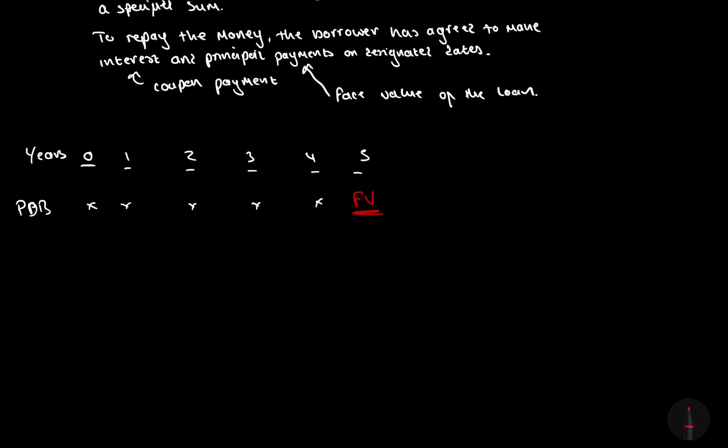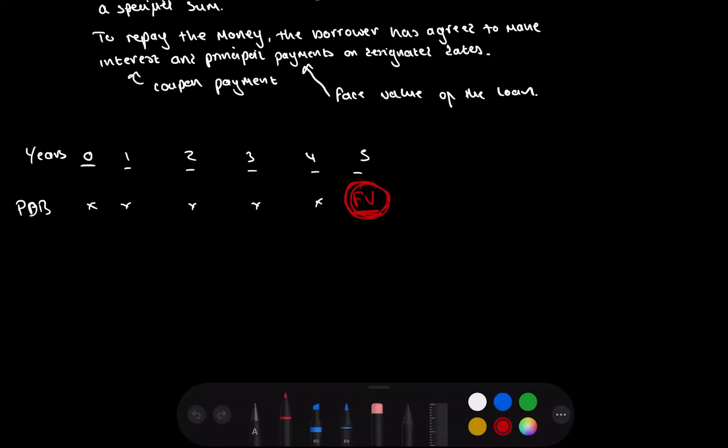Now, what we want to do is we want to try and calculate what we should pay for this pure discount bond. Because obviously, if it's not paying as coupon payments and we're getting the future value, the face value back in the future, we can call this the future value as well. We need to obviously we need a price which is lower than this future value because of the time value of money, because of interest rates, because of inflation.